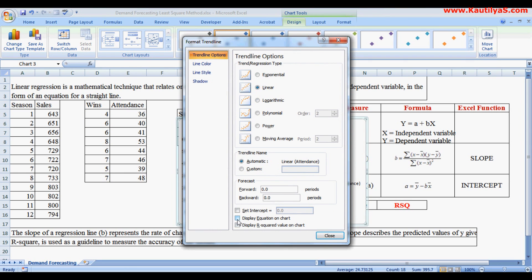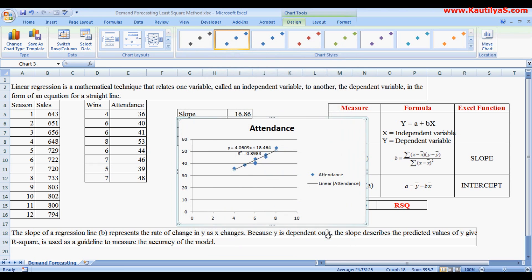Then we can ask to display equation on the chart and also R-square value on the chart. Click OK. So here you got the calculated R-square value.